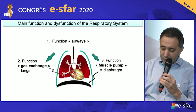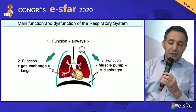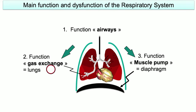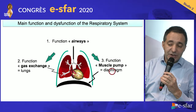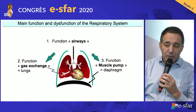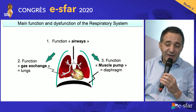First of all, as you see on this slide, you have the airway function. The second is gas exchange, mainly in the lungs. And the third one is the muscle pump, mainly operated by the diaphragm, which allows ventilation — that means CO2 clearance. In a physiological situation, this allows maintaining a physiological range of gas exchange.